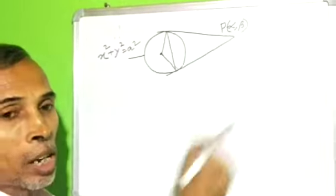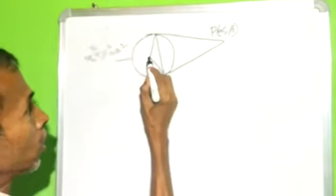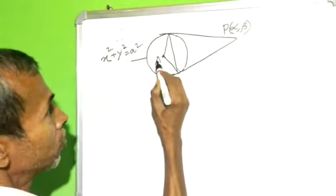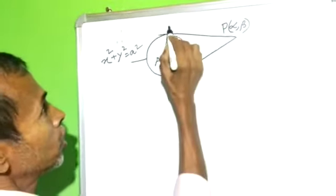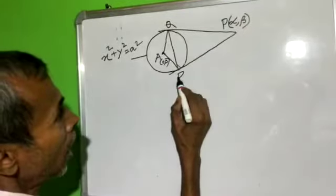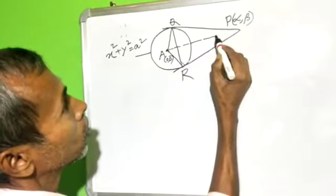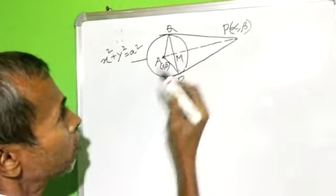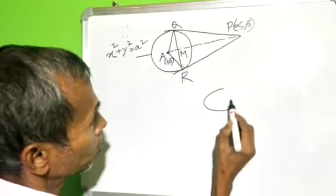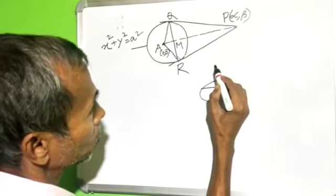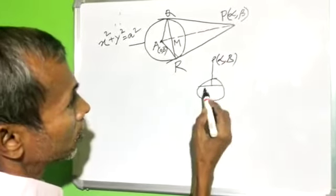P is an external point with coordinates alpha, beta. The center is at (0, 0). On the circle, we have points Q, R, and M.